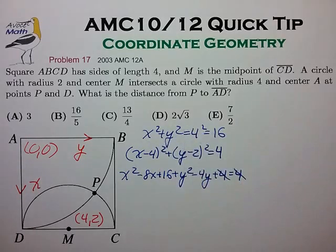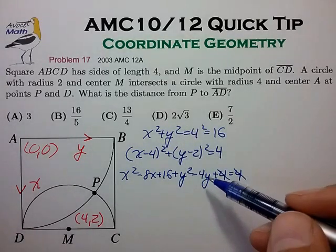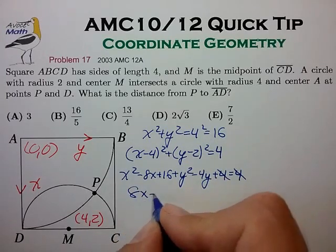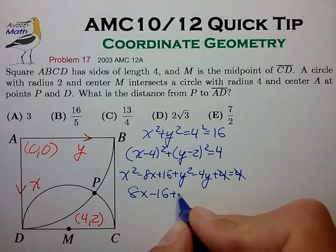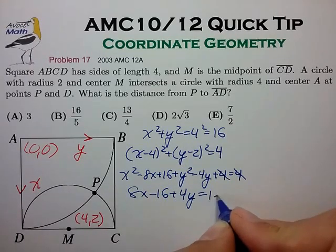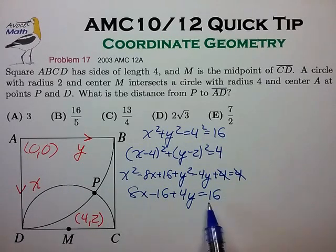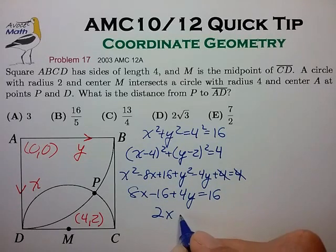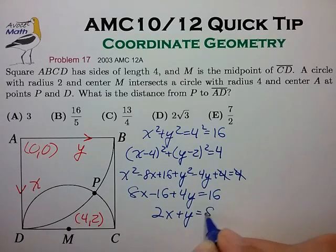And then the X squareds and the Y squareds will drop out. And when we subtract the third from the first, we're left with 8X minus 16 plus 4Y is equal to 16. Divide by 4 and move the 16 over. We then have 2X plus Y is equal to 8.